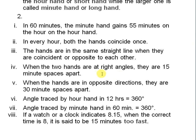When the two hands are at right angles, they are 15 minute spaces apart — for example, when one pin is at 12 and the other is at 3, they form a 90-degree angle. When the hands are in opposite directions, they are 30 minute spaces apart — for example, when one pin is at 12 and the other is at 6.